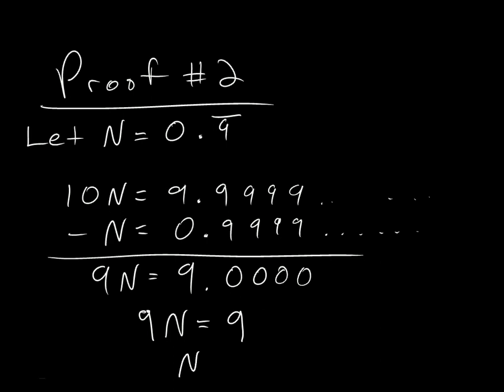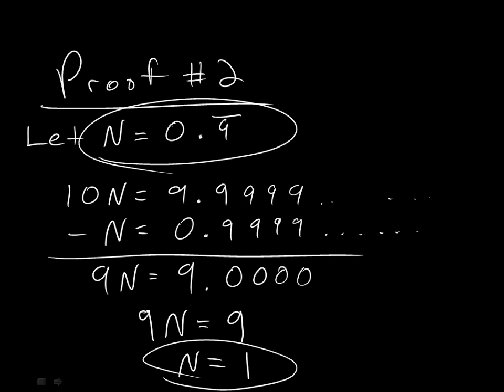Divide both sides by 9, and n is equal to 1. So, there it is again. Here, I set n is equal to 0.9 repeating. I did some math. I didn't break any rules. And I get n is equal to 1 down here.